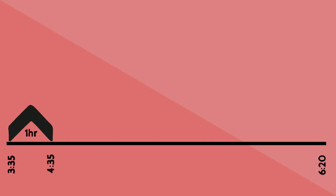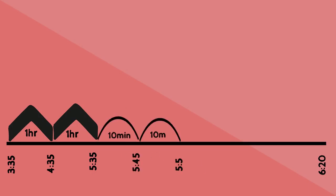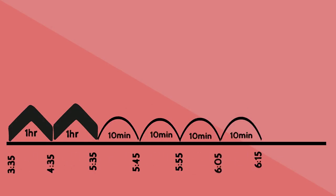Starting with hours: one hour past 3:35 is 4:35, one more hour past is 5:35. Now I'm getting close so I'll start using 10 minutes. Ten minutes past 5:35 is 5:45, another 10 minutes past is 5:55, another 10 minutes past is 6:05, one more 10 minutes past is 6:15. Now I'm very close to my end time of 6:20, so I'm going to count by one minute.